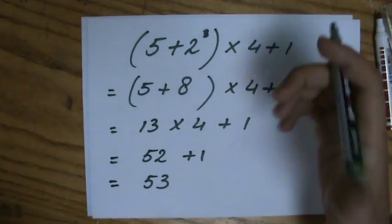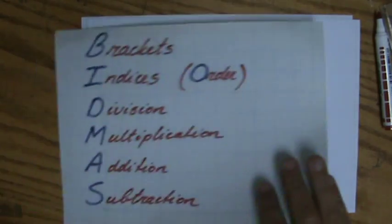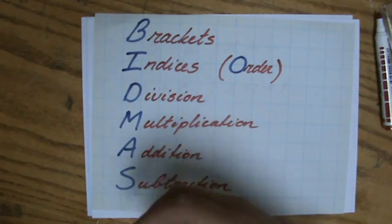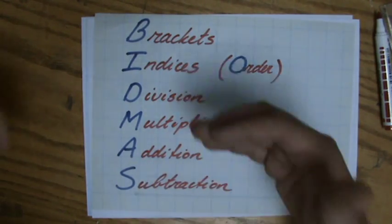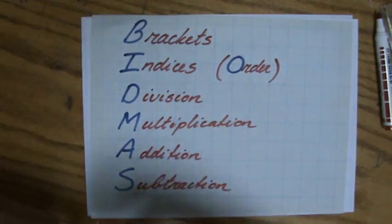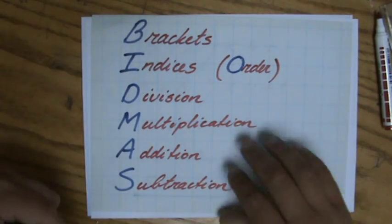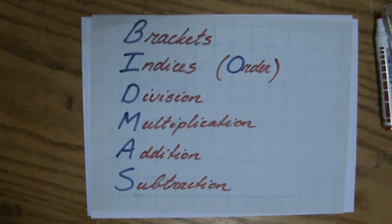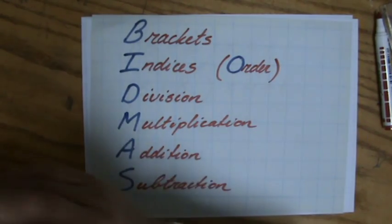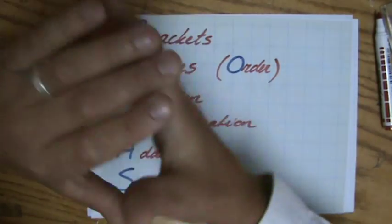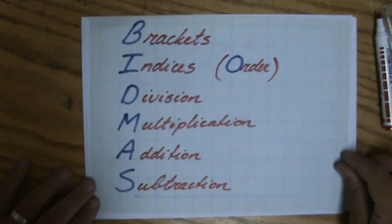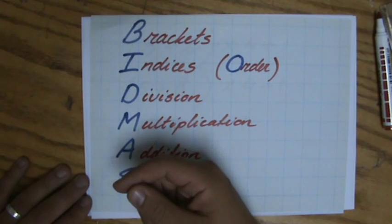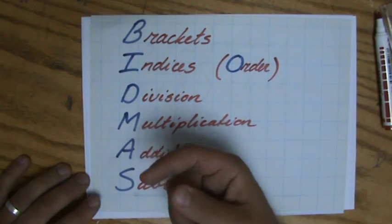So BIDMAS or BODMAS stands for brackets, indices, division, multiplication, addition, and subtraction. It is important to know this rule — to know which operation to do first, what the order of operations is. In my next video there are some example questions to see if you really understand. You can check my site explainingmaths.com for all my resources and ask me any questions you have. I hope to see you there. Bye-bye.